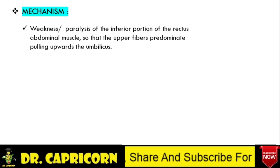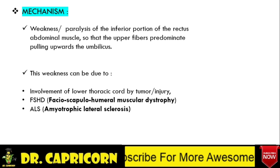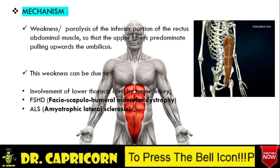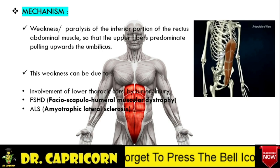This weakness can be caused by: first, involvement of lower thoracic cords by any tumor or injury; second, facioscapulohumeral muscular dystrophy — and this sign is considered a diagnostic sign of facioscapulohumeral muscular dystrophy; and last but not the least, amyotrophic lateral sclerosis. In this image you can see the rectus muscle highlighted.